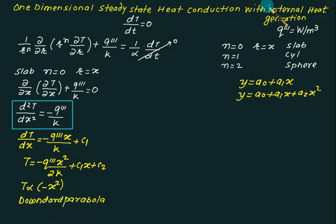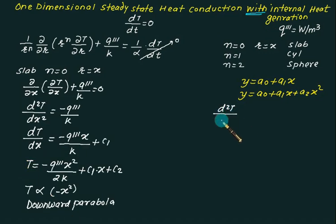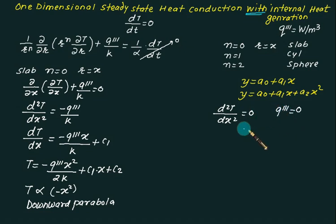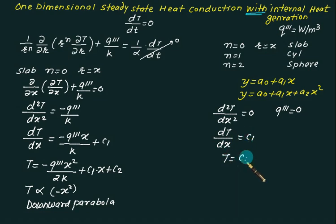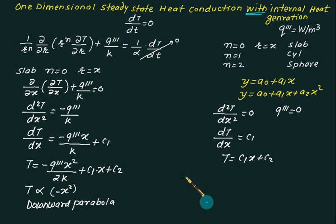When there is no generation, q‴ = 0, so d²T/dx² = 0. Integrating gives dT/dx = C1, and again gives T = C1·x + C2 — a linear distribution. So, without heat generation we have a linear temperature distribution in a slab, and with generation we have a parabolic distribution. We consider three different configurations to find C1 and C2.